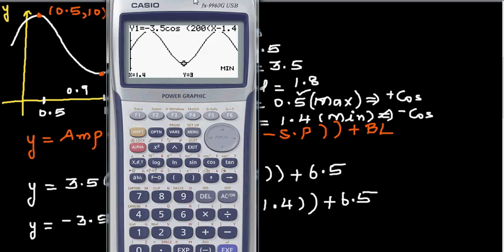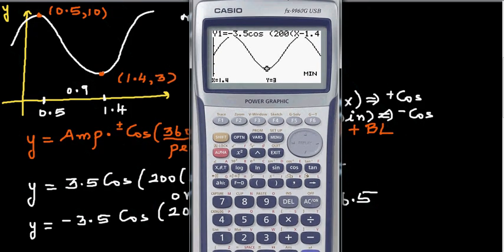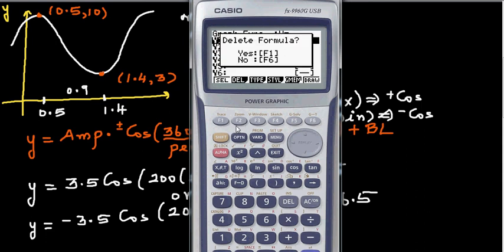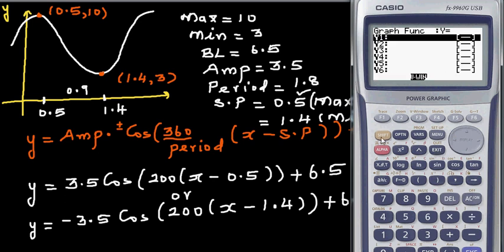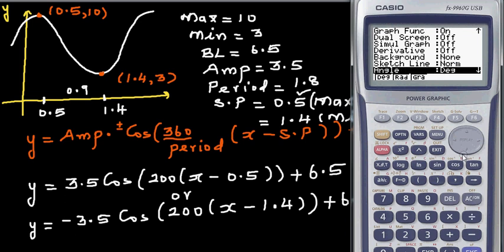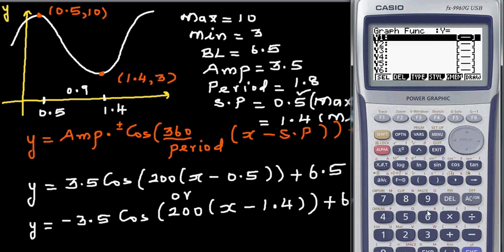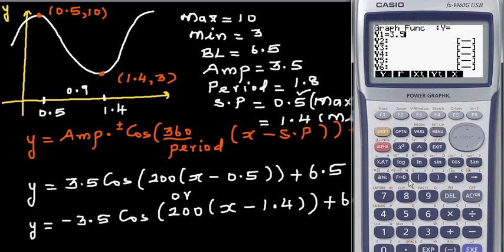Let me show this on a graphing calculator. First, go to setup and check that the calculator is in degrees mode. Then type in the equation: 3.5 cos bracket 200 bracket x minus 0.5 close brackets plus 6.5. Set the scale appropriately before drawing.